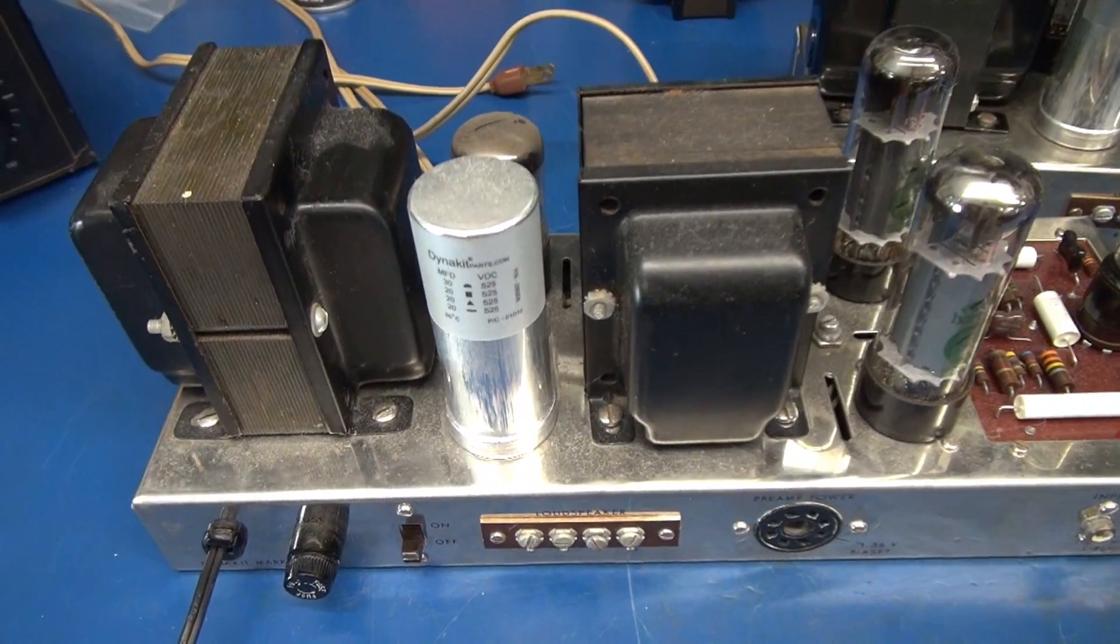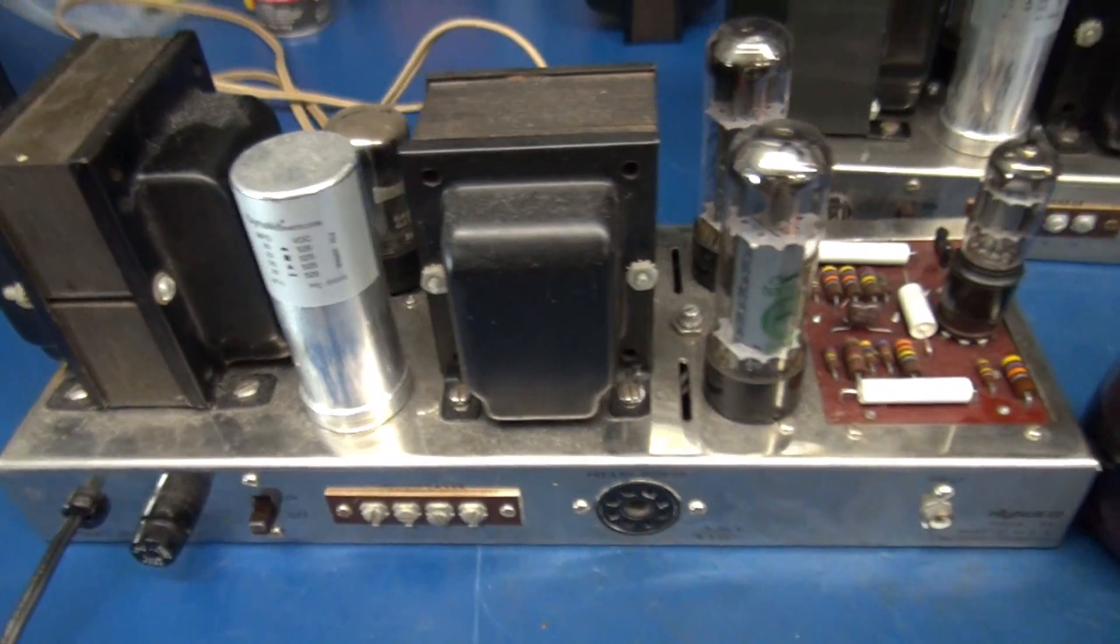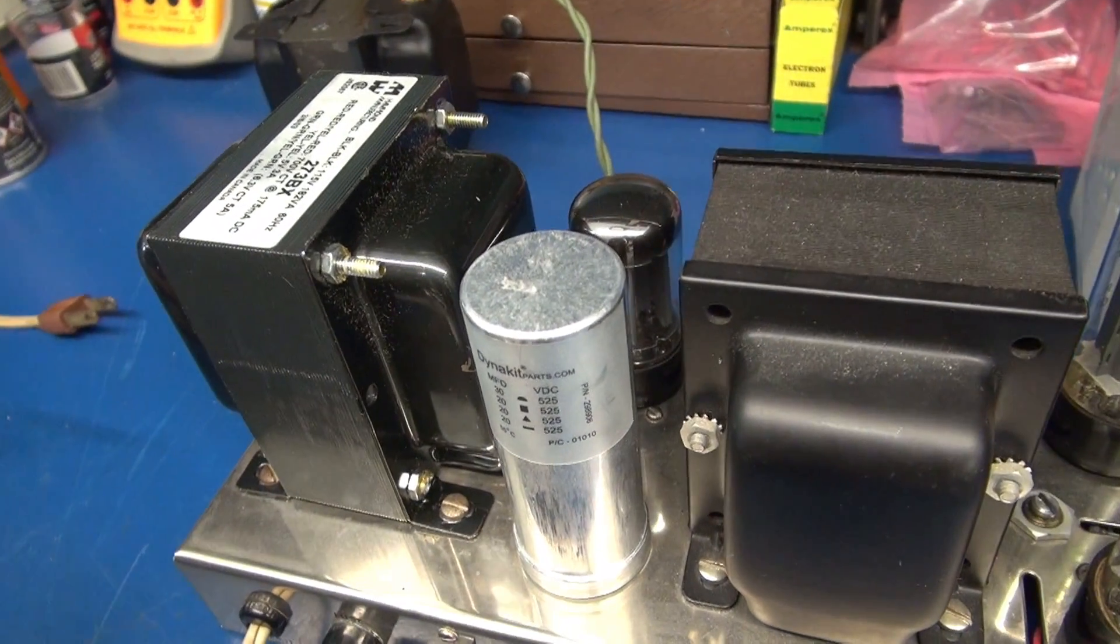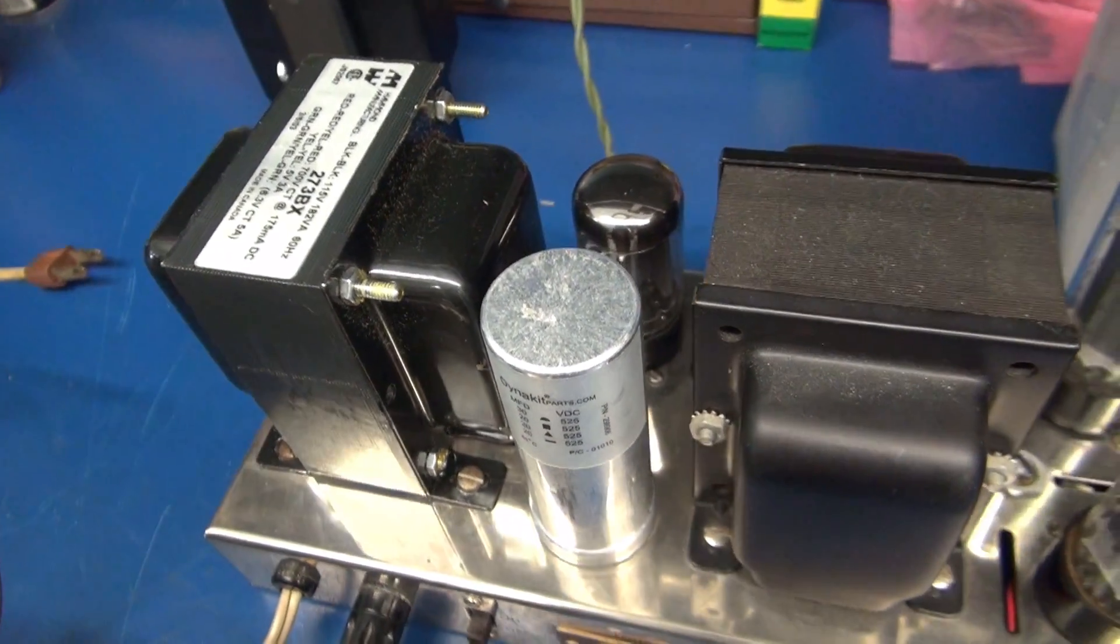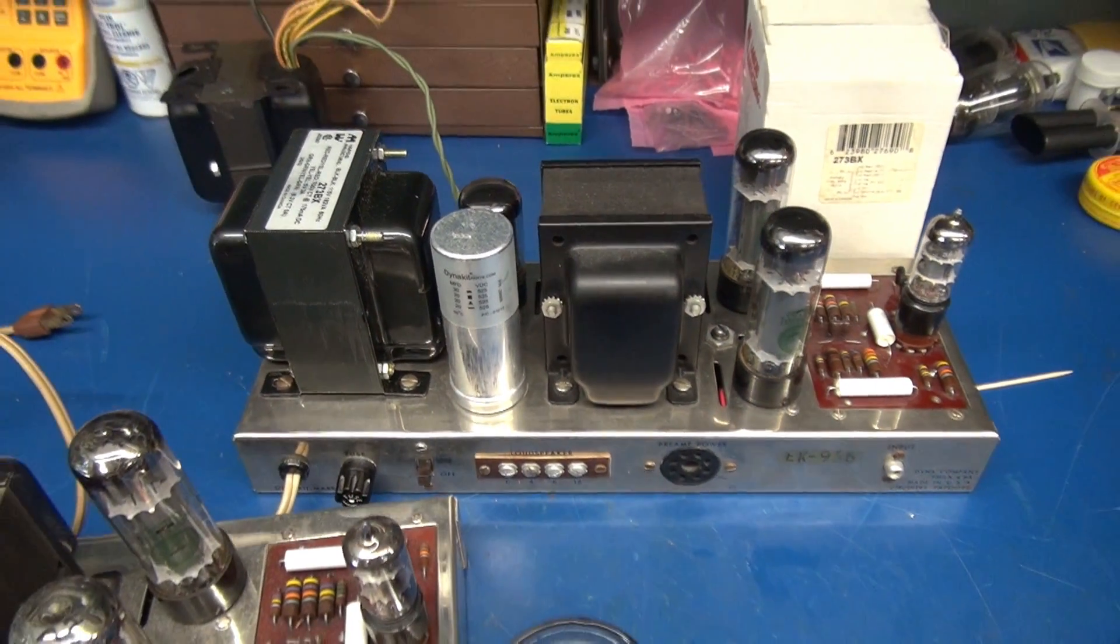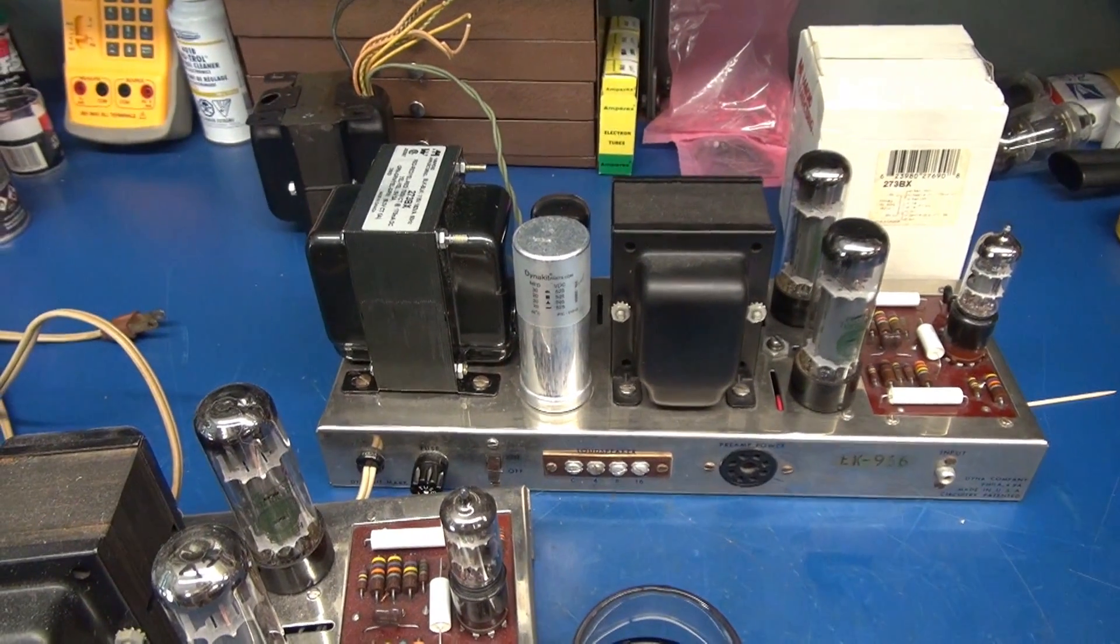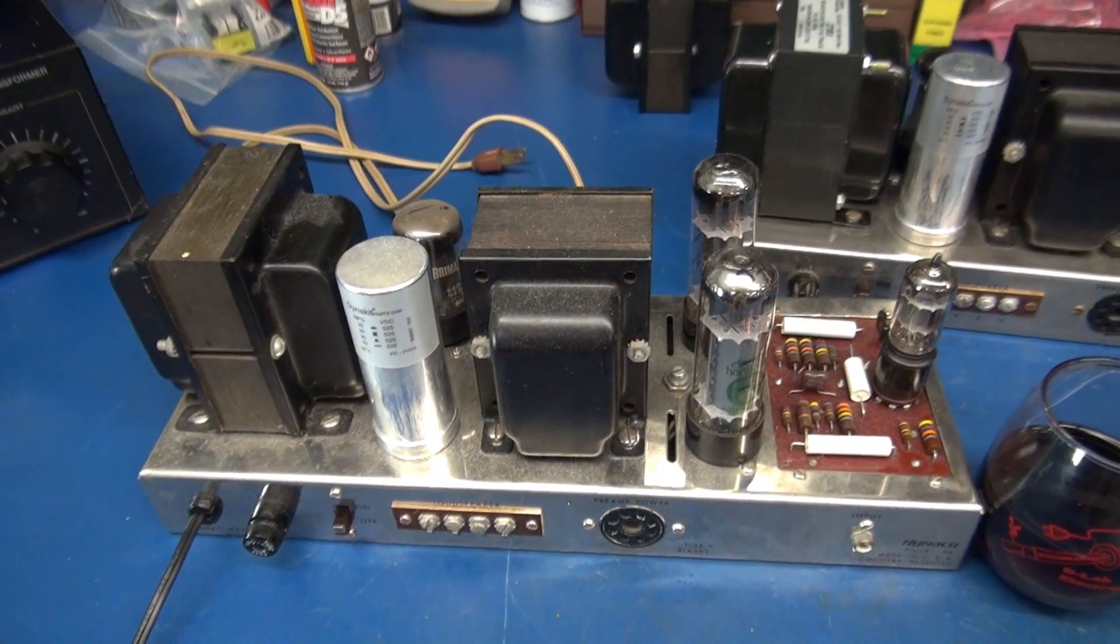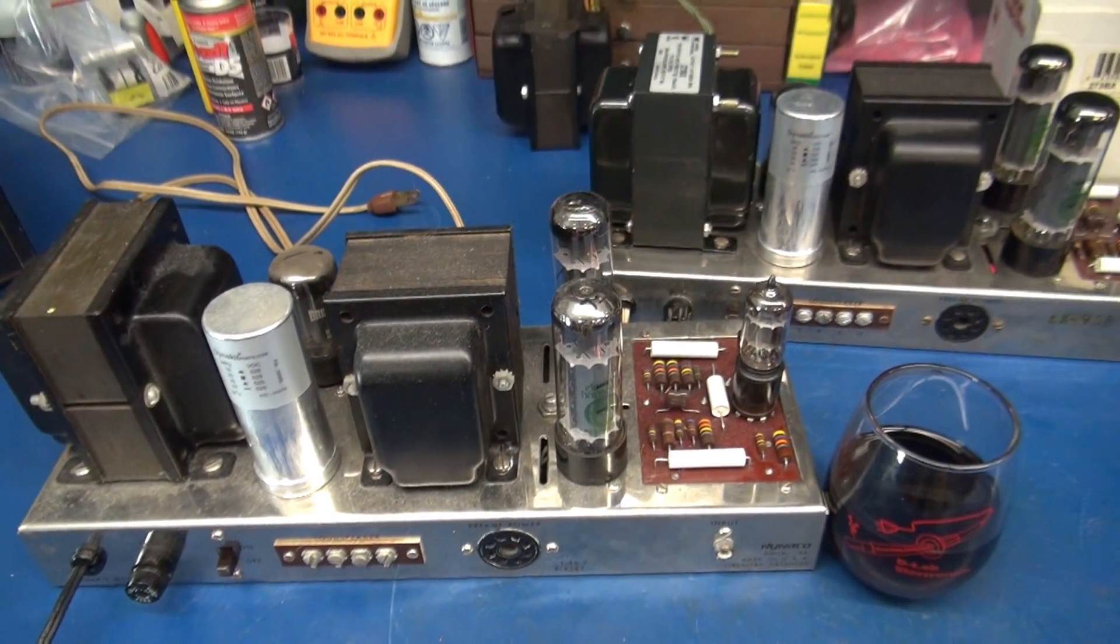Right here is a Mark IV with a stock power transformer and over here I have a Mark IV with a Hammond 273BX installed. They both work identical. The 273BX actually exceeds the original current capability of the Dyneco PA-135. It is a great substitution.